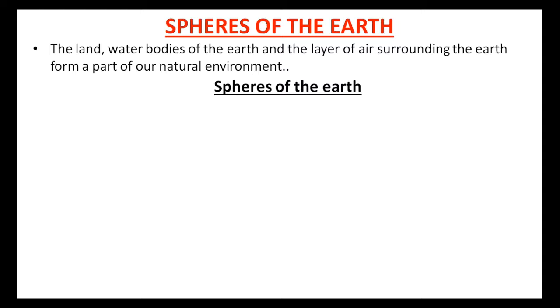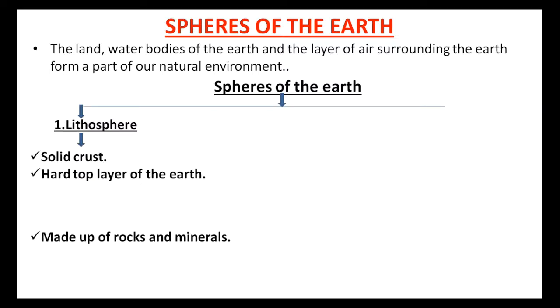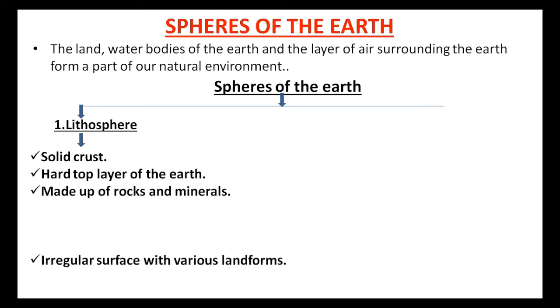Spheres of earth - there are four spheres of earth. The first one is the lithosphere. Lithosphere is the solid crust which forms the hard top layer of the earth. Lithosphere is made up of rocks and minerals.